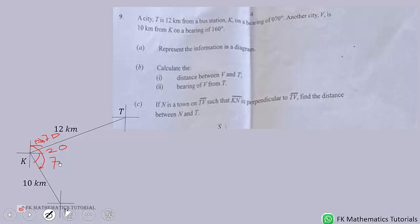From here to here will be 70, because 70 plus 90 will be 160. So this angle here is 90 degrees. So we can use Pythagoras theorem to find the distance between V and T. VT squared will be equal to 12 squared plus 10 squared. Using Pythagoras theorem, we can simplify to get VT to be square root of 244, which is square root of 61 times 2, or 2√61 kilometers.